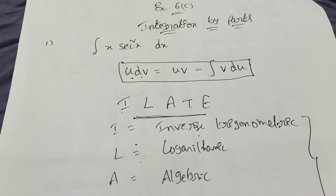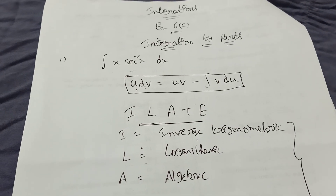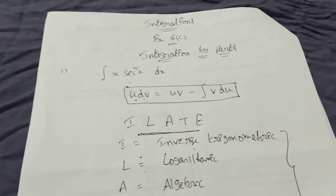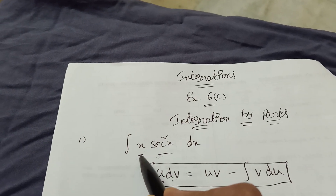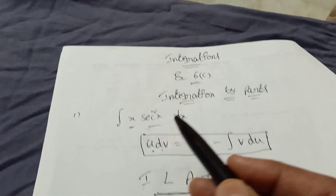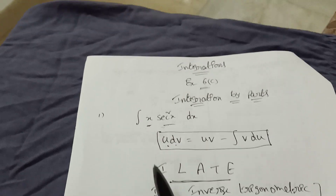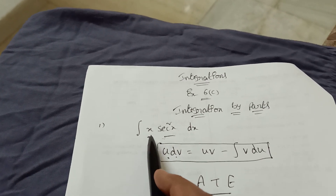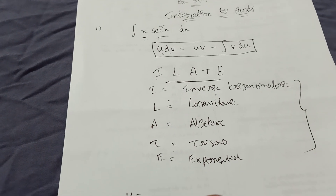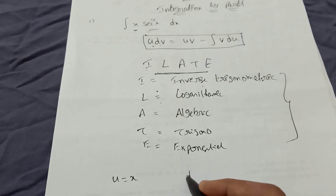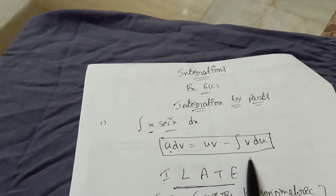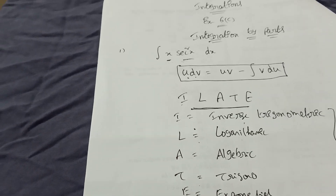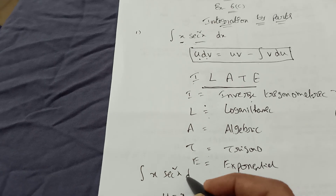Now I am explaining some examples. This is very important — it is the basics. There are different integrations and differential equations after this. The first problem: integration of x·sec²x dx. Here x is an algebraic function and sec²x is a trigonometric function.